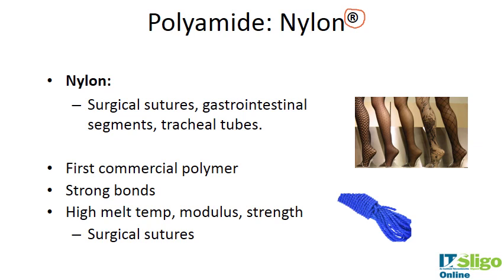Nylons, or polyamides, are familiar from women's tights and ropes — applications requiring good strength. There is a very strong bond between the monomers, giving nylons high strength, high melt temperature, and good modulus. Their major use in medical devices is surgical sutures. They can also be used in gastrointestinal segments and tracheal tubes because of their flexibility and strength.